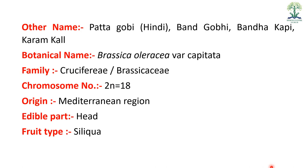Other names of cabbage include Patta Gobi and Bandh Gobi in Hindi, and Bandha Kapi and Karam Kaal in some regional languages. The botanical name is Brassica oleracea variety Capitata. Family: Cruciferae (sometimes written as Brassica C.B.). Chromosome number: 2N = 18. Origin: Mediterranean region. Edible part: the head, which is a large terminal bud. Fruit type: Siliqua.